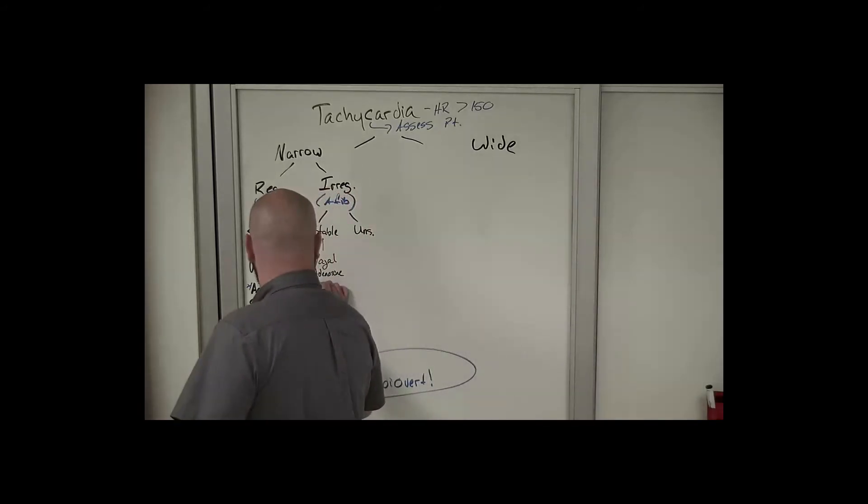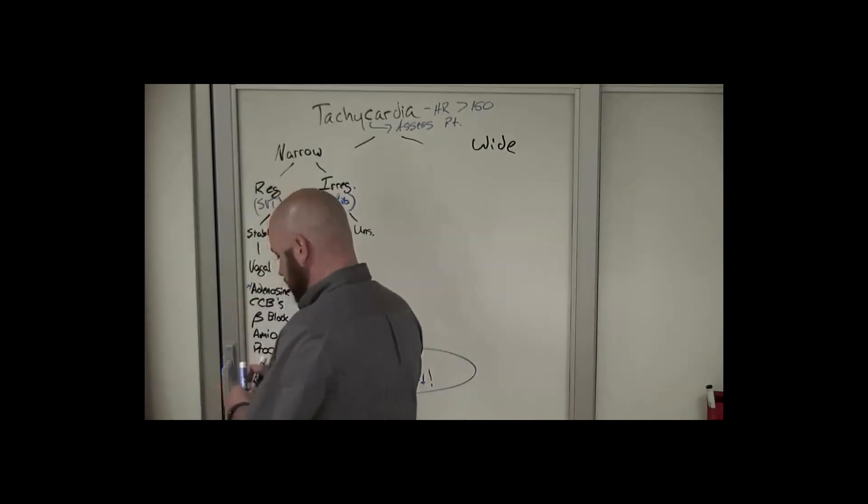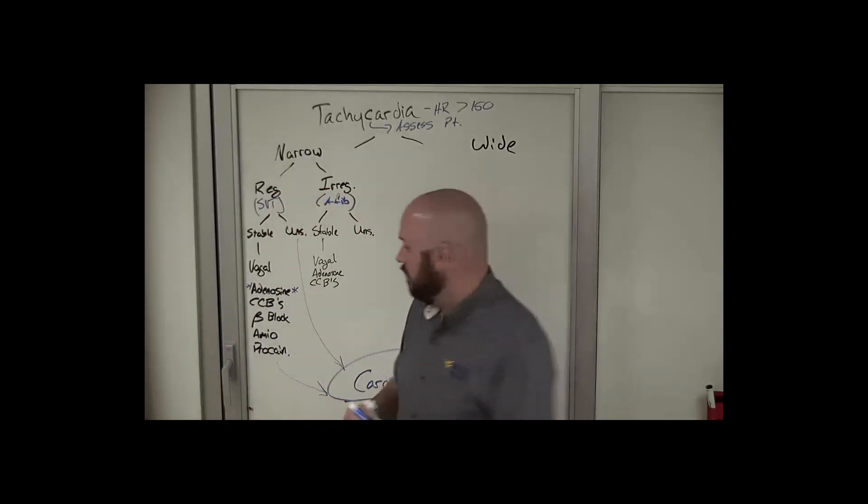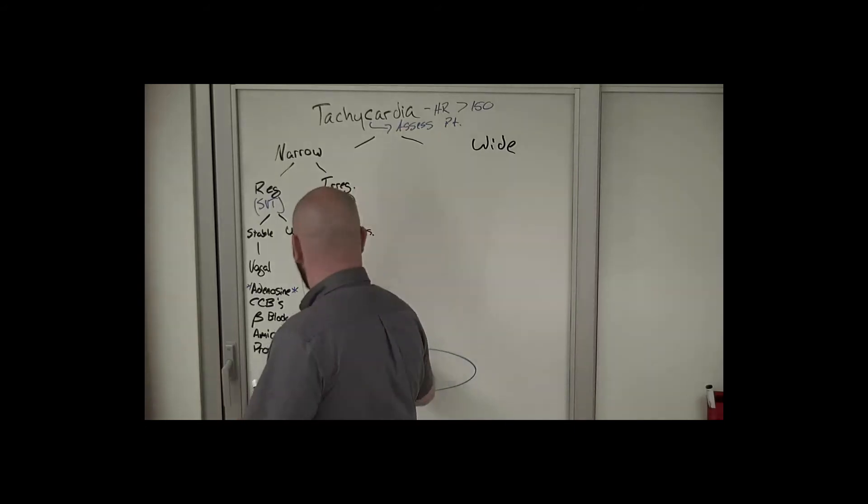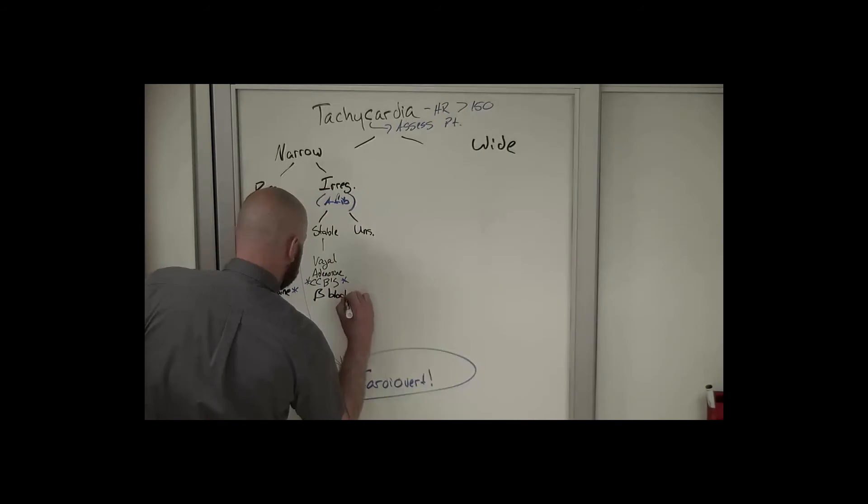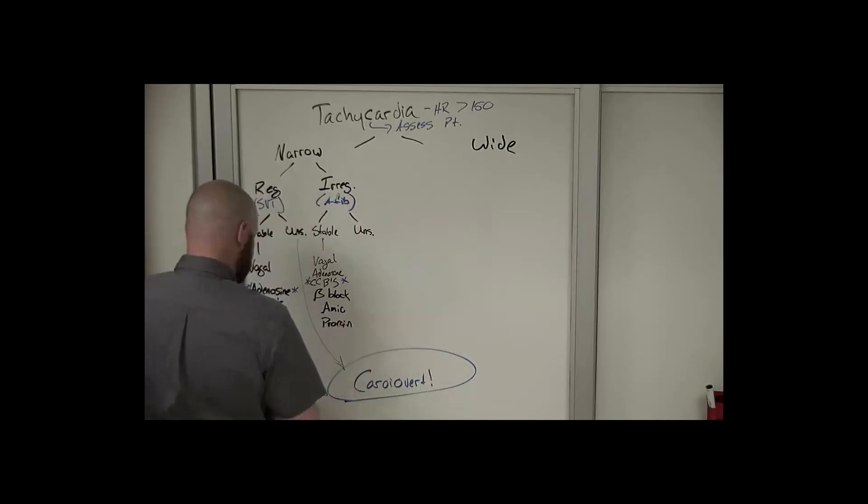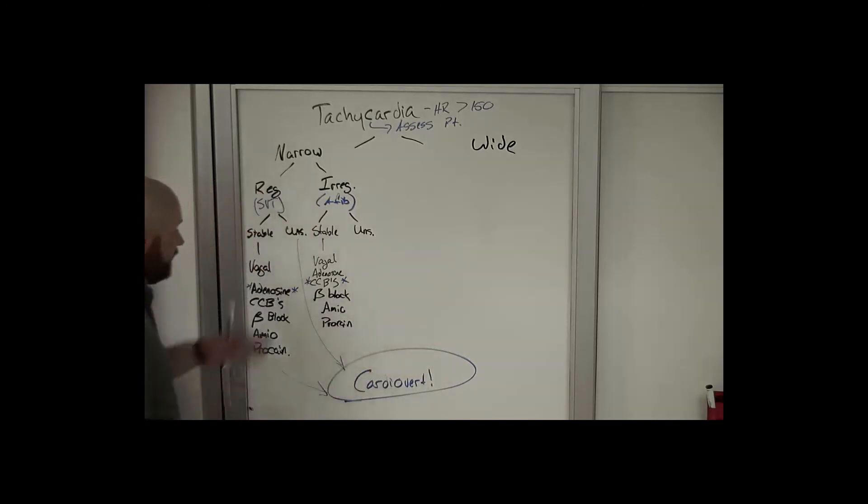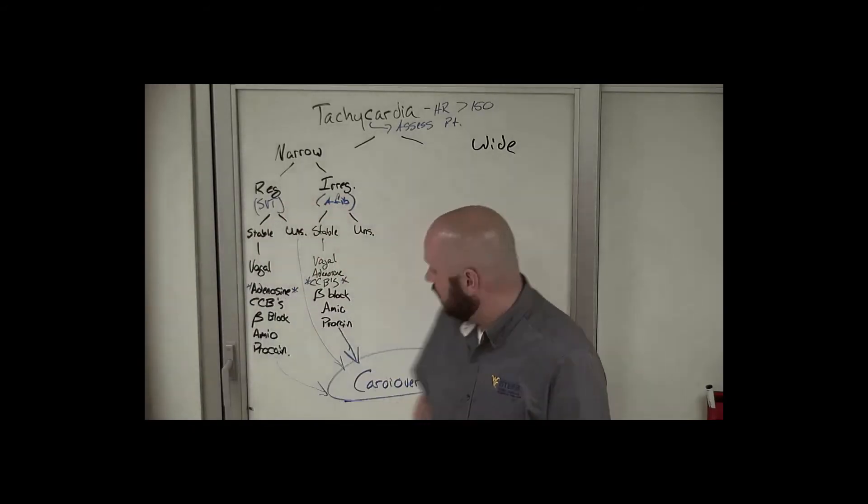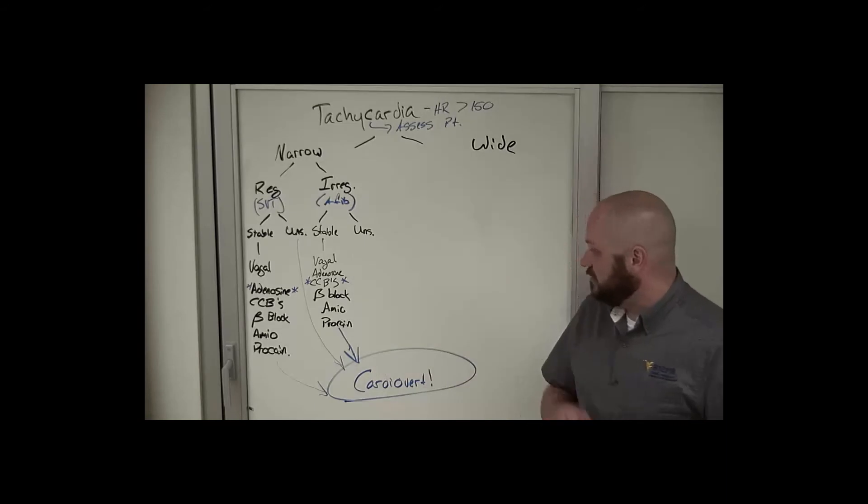Beta blockers still are not inappropriate here, with the caveat that they often cause hypotension. Amiodarone is okay here and so is procainamide. And then of course if none of that works, we're going to go to cardioversion. So diltiazem is typically our drug of choice here. And then if they're unstable, of course we just go directly to cardioversion.